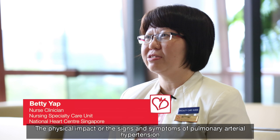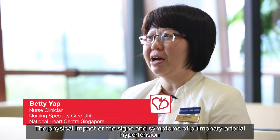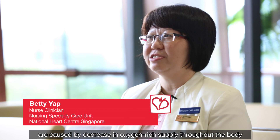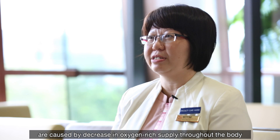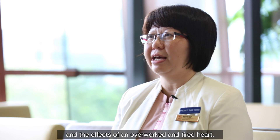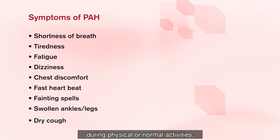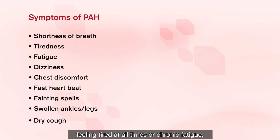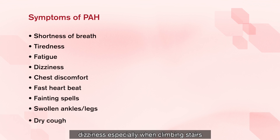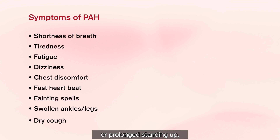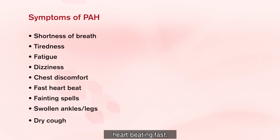The physical impact, or the signs and symptoms of pulmonary arterial hypertension, are caused by a decrease in oxygen-rich supply throughout the body and the effects of an overworked and tired heart. Some of the most common symptoms are shortness of breath during physical or normal activities, chronic fatigue, dizziness — especially when climbing stairs or after prolonged standing — and chest discomfort and a fast heartbeat.